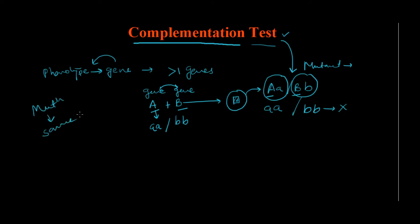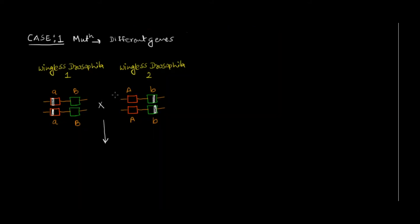In short, the complementation test helps us determine where the mutation is — is it in the same gene or in different genes? Let me show you an example. I have two mutant Drosophila which are wingless. There may be two genes responsible for the development of wings in Drosophila, but I don't know whether the mutation in these two Drosophila is in the same gene or in a different gene.